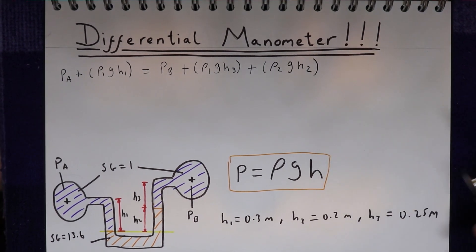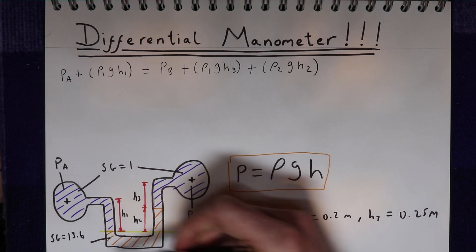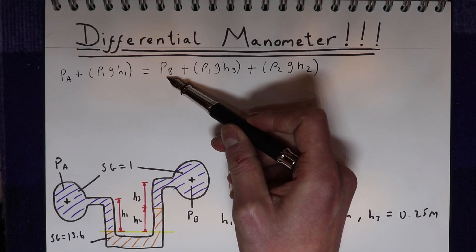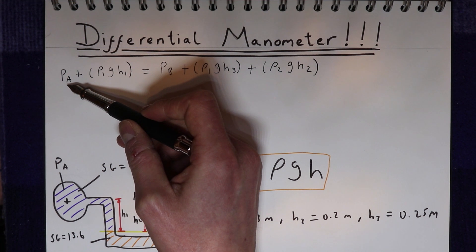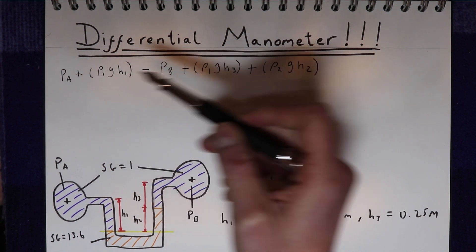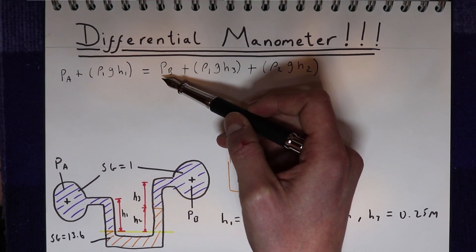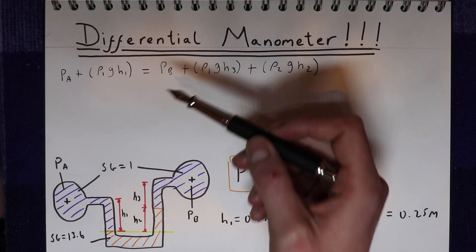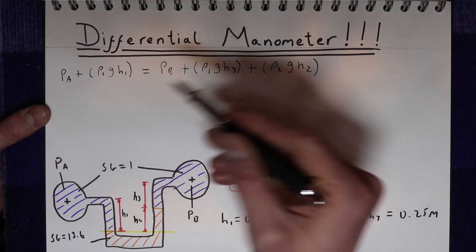So now we've got an equation to describe what's going on in this system. If we knew what Pb was we could rearrange the equation to get Pa. If we knew what Pa was we could rearrange the equation to get Pb. Or as in this example, if we don't know either of them we can rearrange the equation to get the pressure difference.